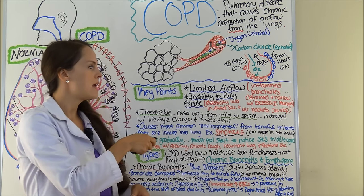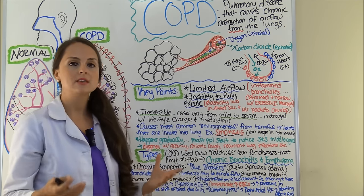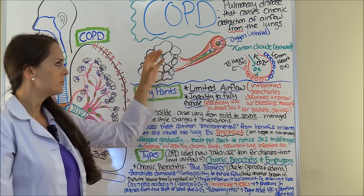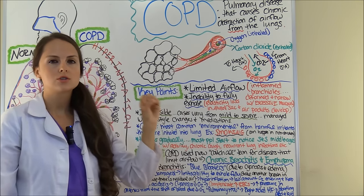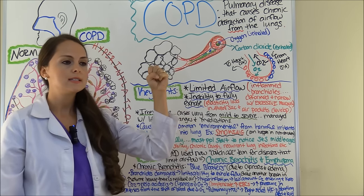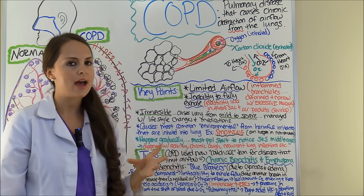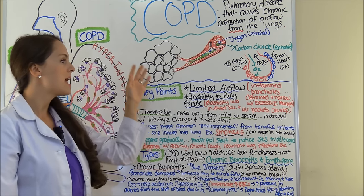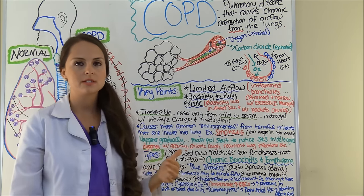Another key point is that the patient does not have the ability to fully exhale. This is due to the loss of elasticity in the alveolar sacs. They're floppy — they should be nice and circular and uniform, but they've completely lost elasticity. Your alveolar sacs normally inflate and deflate, and if they don't have their form, you won't have proper gas exchange. Air pockets are going to develop over time, especially in emphysema patients.